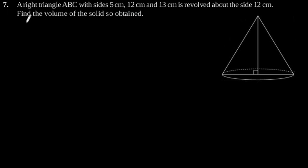Exercise 13.7, Question number 7. A right triangle ABC with sides 5 cm, 12 cm and 13 cm is revolved about the side 12 cm. Find the volume of the solid so obtained.